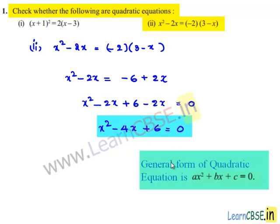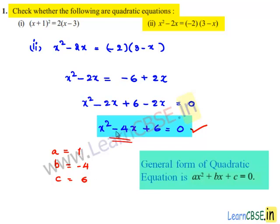We have the general form of a quadratic equation as ax squared plus bx plus c equals 0. Comparing this equation with the standard form, we get a equals 1, b equals minus 4, and c equals 6. So the final equation x squared minus 4x plus 6 equals 0, on comparing with the general form, confirms that the given equation is a quadratic equation.